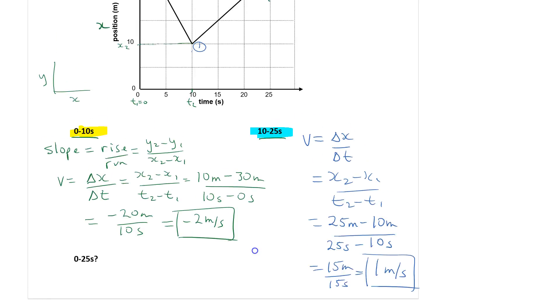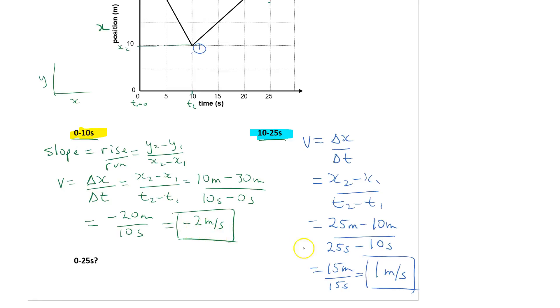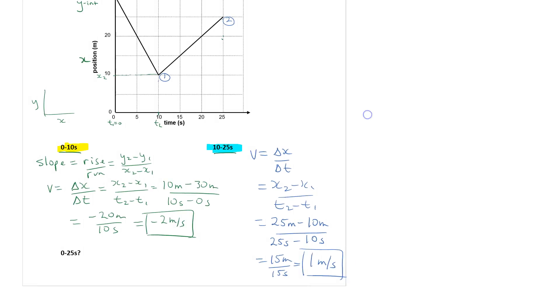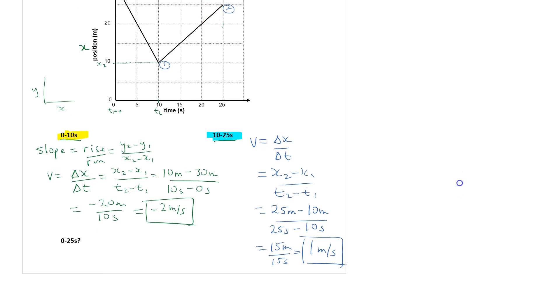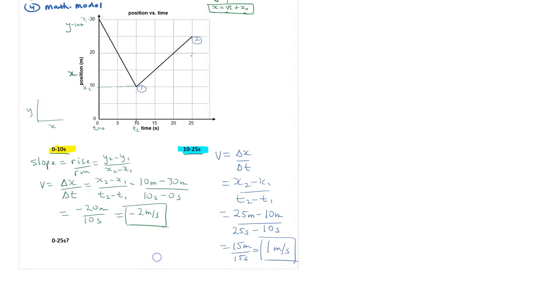You'll notice a couple things. We went from negative to positive, and in our graph we went from downhill to uphill. The other thing is, 2 is a larger number than 1, and this line is more steep. It's going downwards at a very steep angle, compared to this was going up at not as steep.